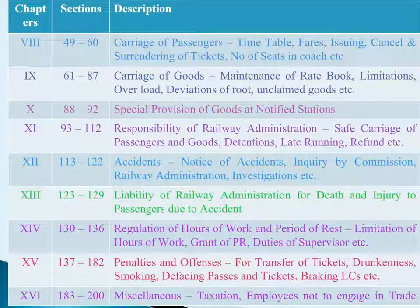Chapter 13: Liability of Railway Administration for Death and Injury to Passengers due to Accidents has seven sections, Sections 123 to 129. These sections cover providing liability, compensation on account of untoward accidents, application for compensation, interim relief, etc.